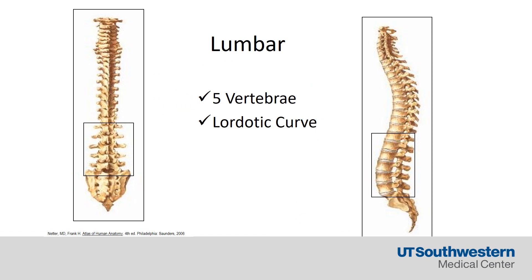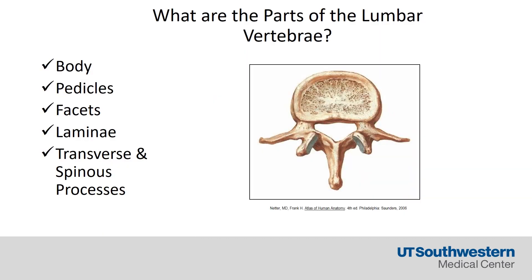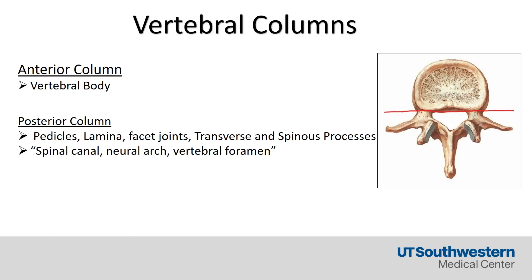Basic spinal anatomy: we have cervical vertebrae, we have lumbar vertebrae — five vertebrae with lordotic curves — and then we obviously have 12 thoracic vertebrae, which are usually the kyphotic regions of the body. What parts of the lumbar vertebrae do you need to know? You need to know the pedicles, the body, the facet joints, and alignment of the transverse processes. I try to divide these into the anterior column of the vertebral body and the posterior column, which includes the pedicles, alignment of the facet joints, and the transverse and spinous processes.